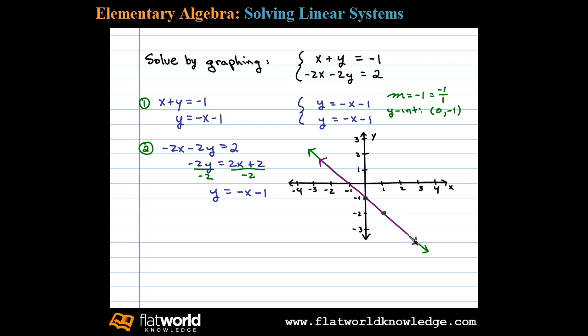We can write all the solutions in the form of an ordered pair (x, mx + b). In this case, the slope-intercept form was y equals negative x minus 1, so any point (x, -x - 1) where x is a real number is a solution to this system.